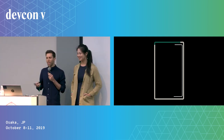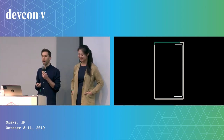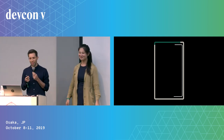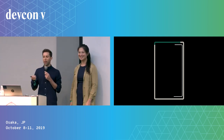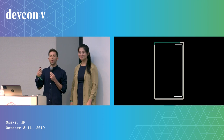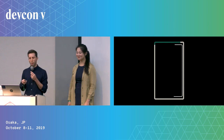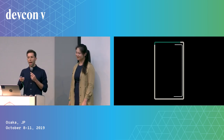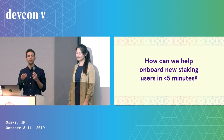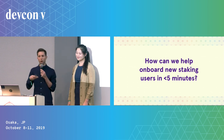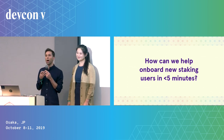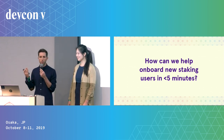The stakes are too high — no pun intended — to allow users to drop off like this. So how can we design for these problems? How can we help onboard new staking users in under five minutes?